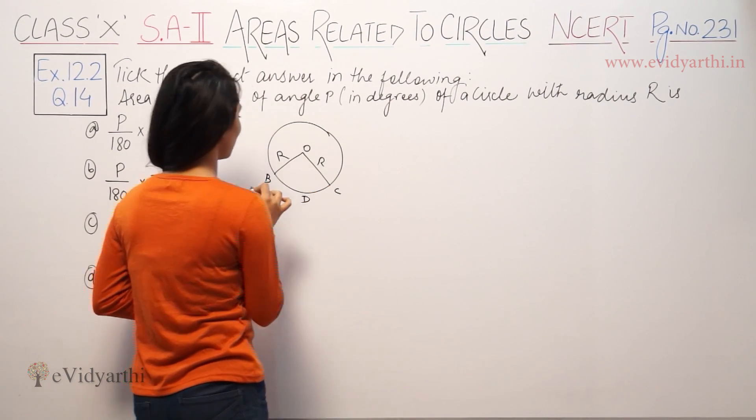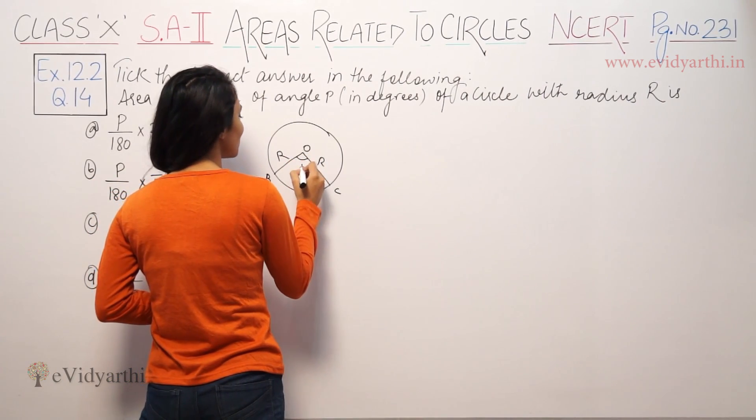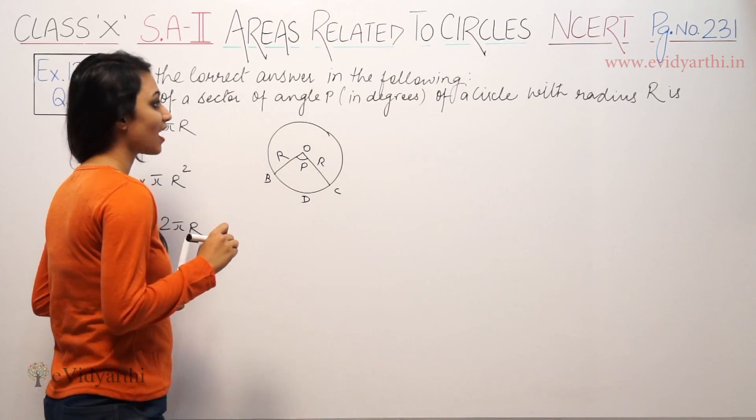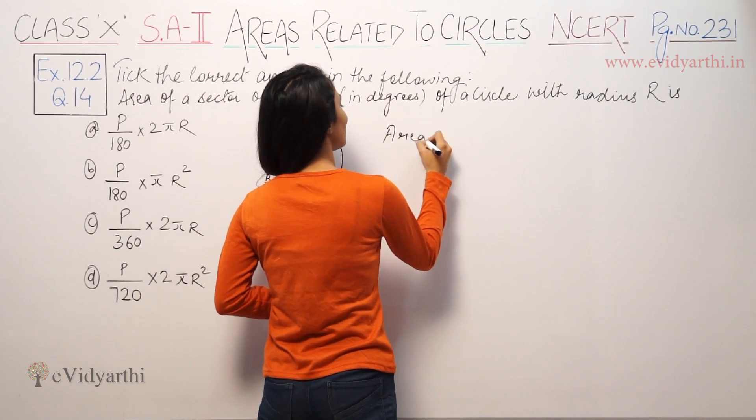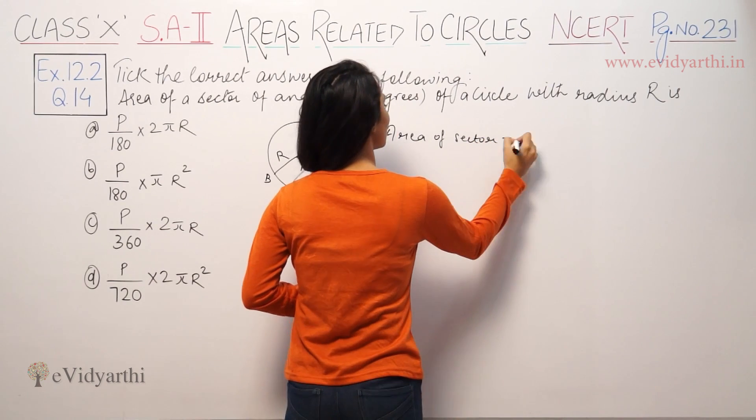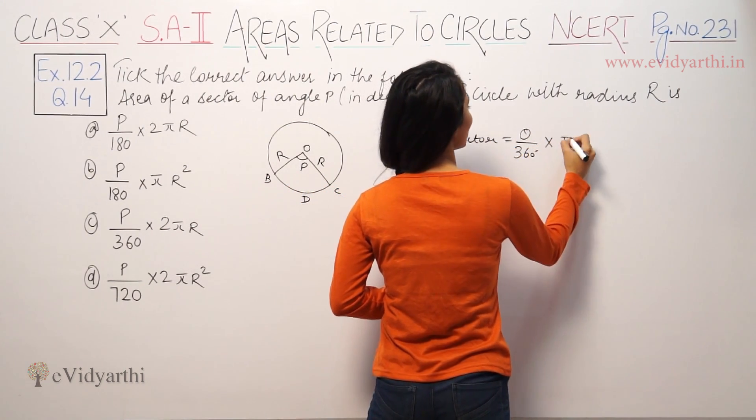So sector of angle P. And here is very given P. And here is the area of sector formula method. So area of sector: theta by 360 degree into pi R squared.